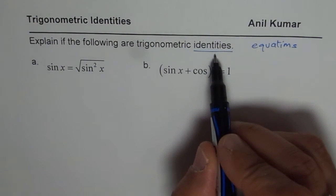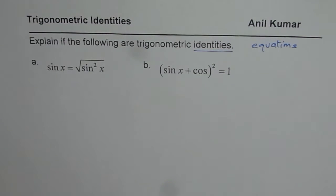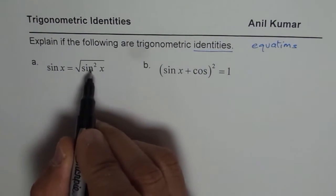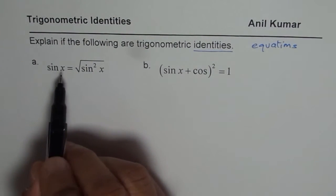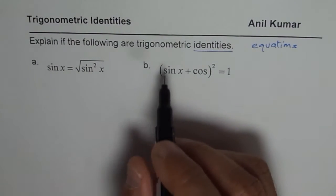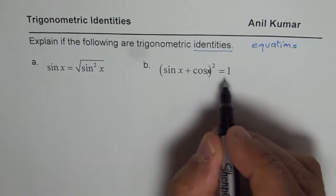Now, identities are one which are true for all values in the domain of the function. Those are the identities. We have sin x equals square root of sin square x. We need to prove that it should be true in the entire domain of x.